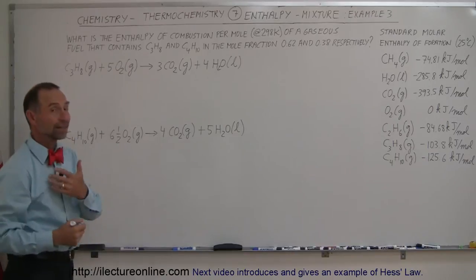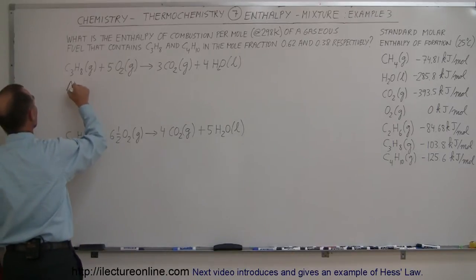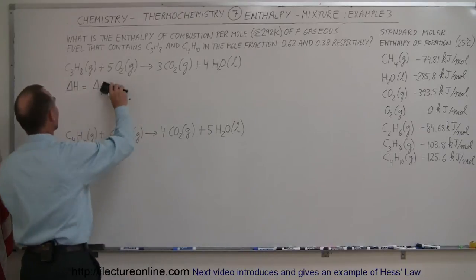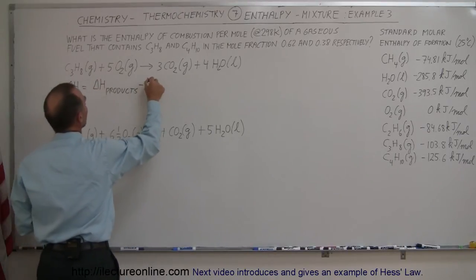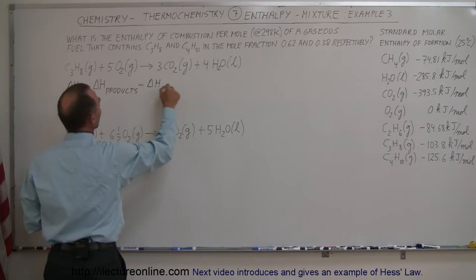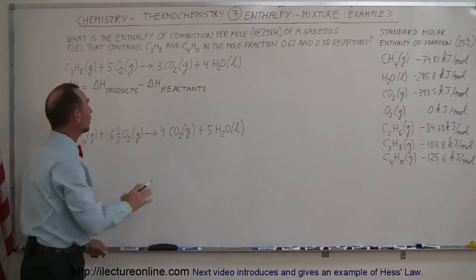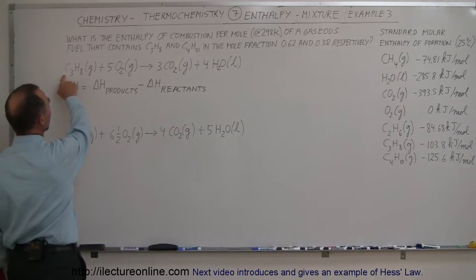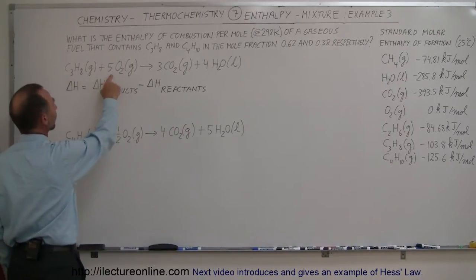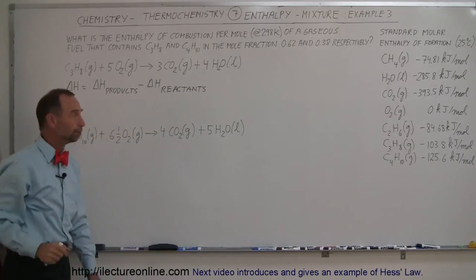The idea is that when we calculate enthalpy, the change in enthalpy of a reaction is always equal to the delta H of the products minus the delta H of the reactants. Starting with the products, notice this is a molar quantity: one mole of propane, five moles of oxygen, three moles of carbon dioxide, and four moles of water.